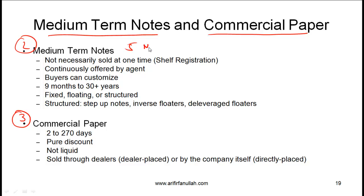If you have, say, $5 million worth of medium term notes, you might have $2 million sold initially and the rest kept and sold later. This process is called shelf registration — some medium term notes are kept on the shelf and issued or sold later. Medium term notes can be thought of as being continuously offered by an agent, rather than directly by the issuer.